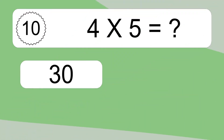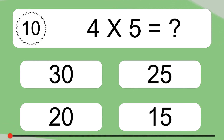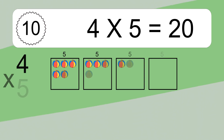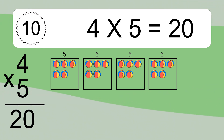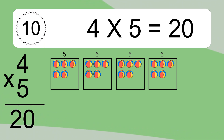4 times 5 equals what? 4 times 5 equals 20. We have 4 boxes, and each box has 5 colorful balls inside. If you count all the balls in all the boxes together, you will have 4 times 5 balls. This equals 20 balls.